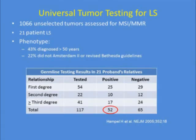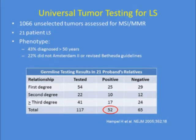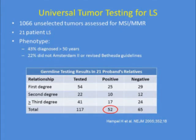Universal tumor testing for Lynch syndrome is important. A study took 1,000 population-based colon cancer samples; 21 individuals had Lynch syndrome-related tumor evidence via MSI or mismatch repair, and those patients were found to have germline mutations. Importantly, 43% were diagnosed over age 50, and 22% did not meet Amsterdam II or Revised Bethesda criteria. Additionally, 52 additional relatives in those families were subsequently diagnosed with Lynch syndrome.